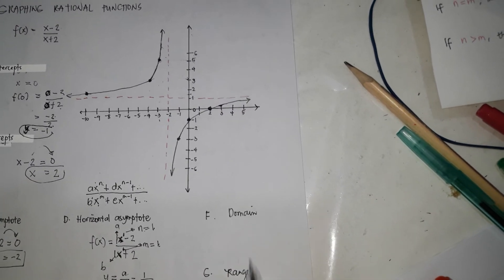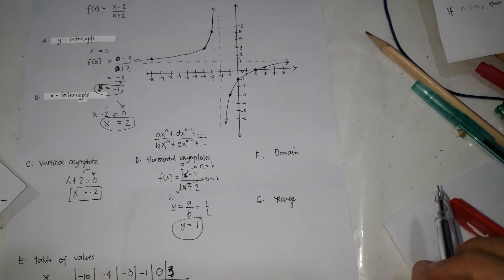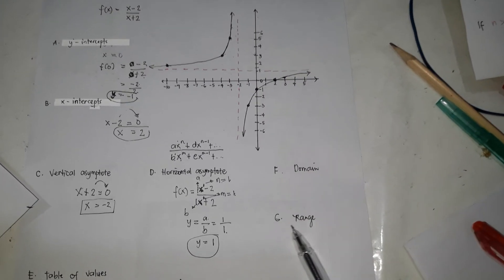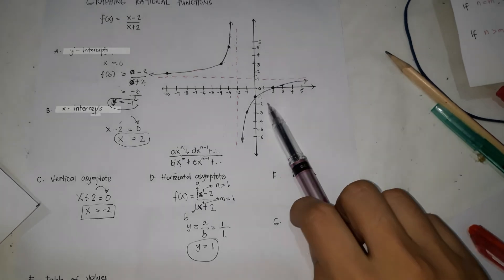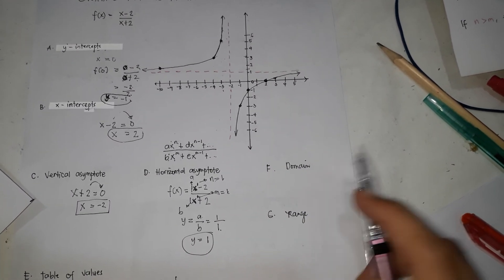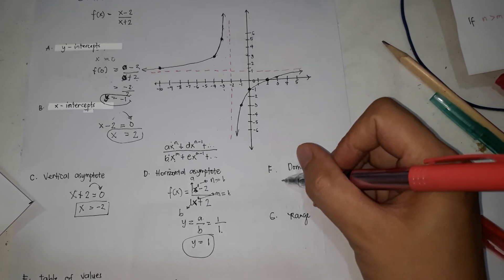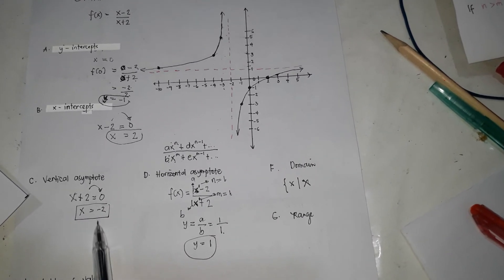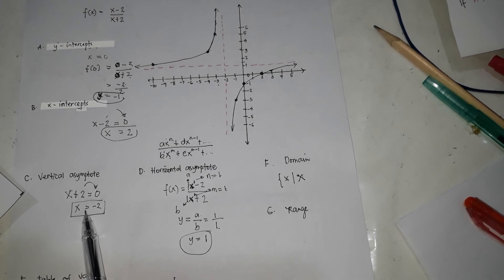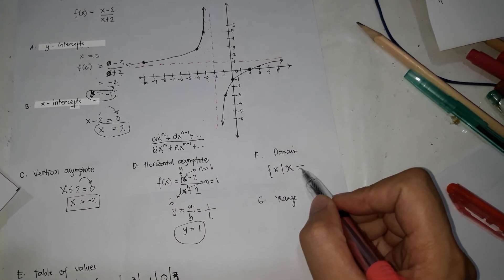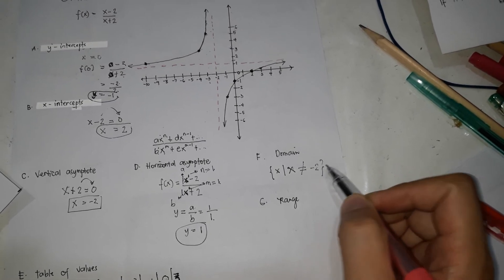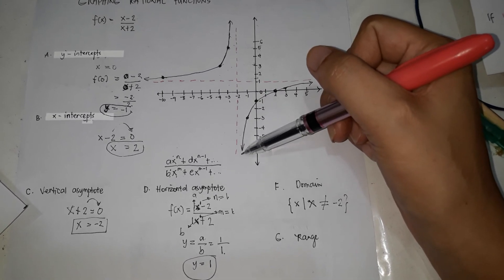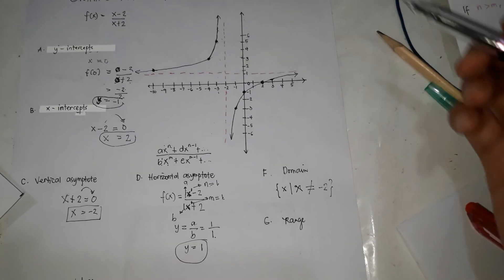We need to identify the domain and range. The domain is all the values of x for which y has a value — where the graph passes through. To identify the domain, look at the vertical asymptote. Since the vertical asymptote is x equals negative 2, the domain is: x such that x is not equal to negative 2.